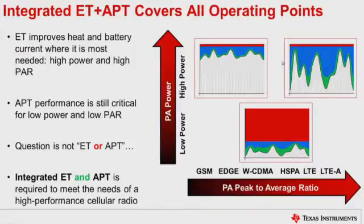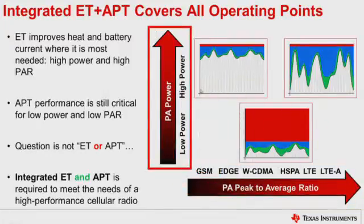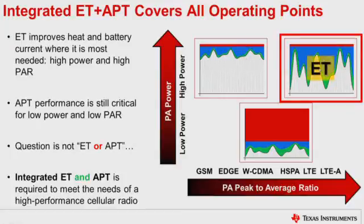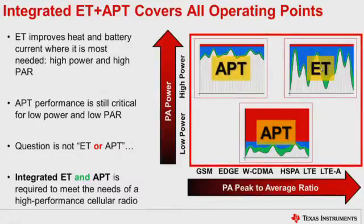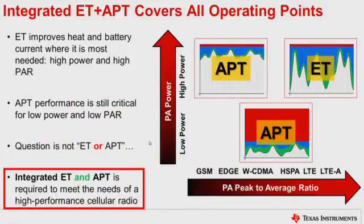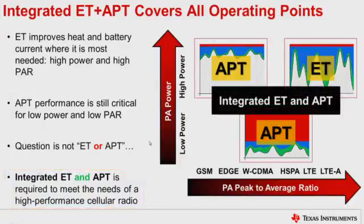So, to summarize those three operating conditions, we have the low to high peak to average ratio and the low to high power cases. Envelope tracking is clearly the best for the high peak to average ratio, high power cases like LTE. And then for the low power and the low peak to average ratio cases, we might prefer APT. It's not a question of whether we should use APT or ET, but really we need to find an integrated ET and APT solution.